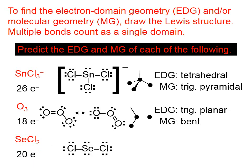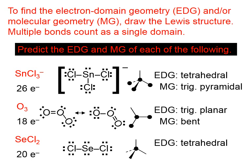In this next example, the electron domain geometry is tetrahedral because there are four domains around the central atom. Two of them are bonding and two of them are non-bonding, and that gives us a molecular geometry that is bent.